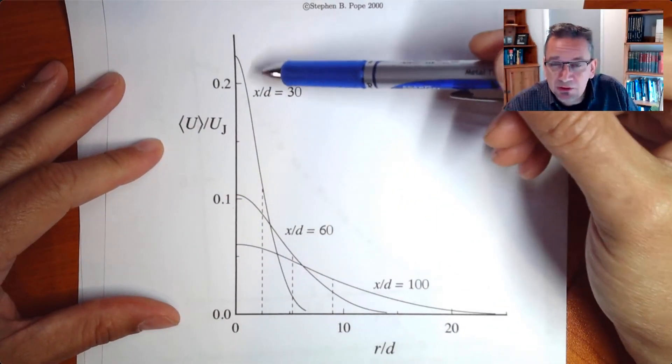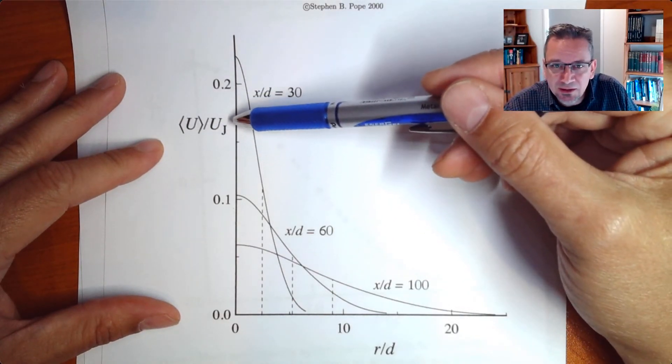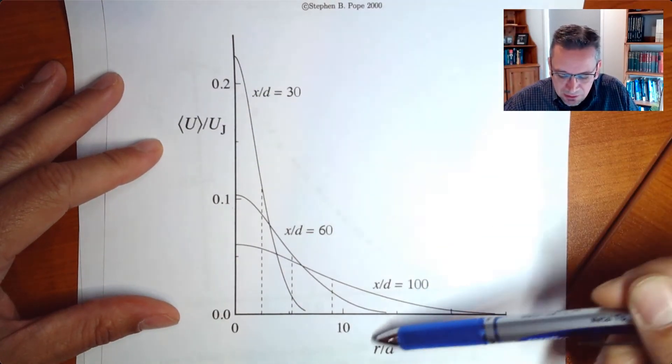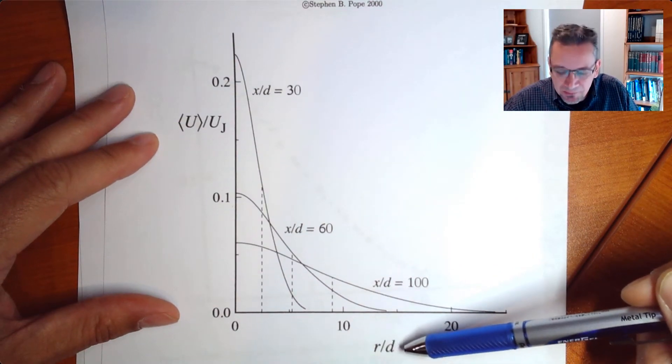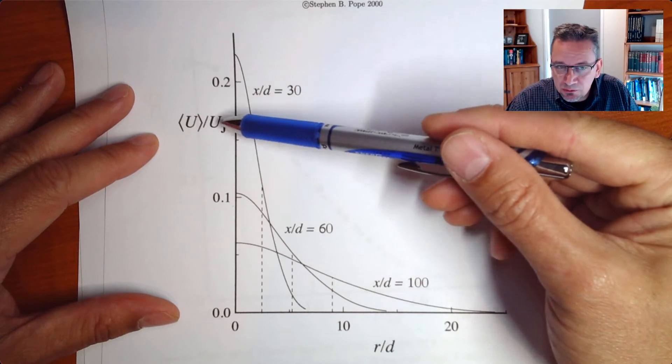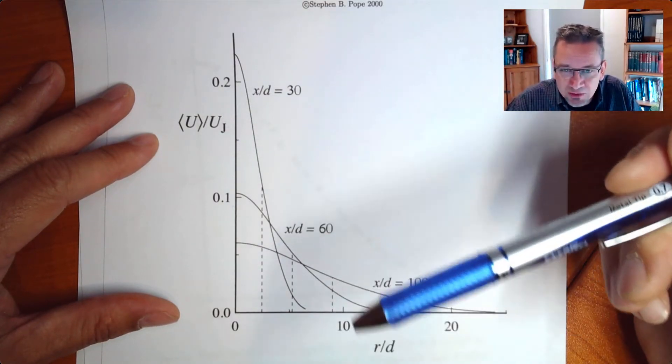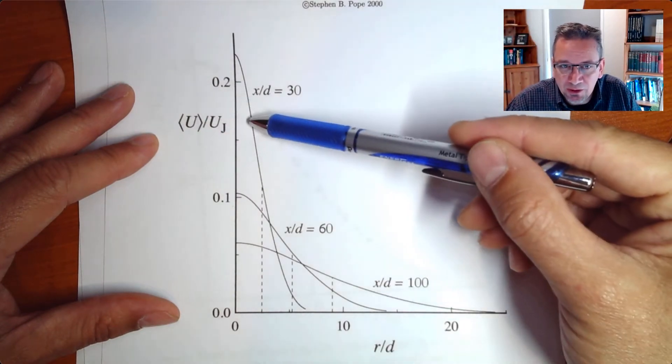So we have here first the raw data, more or less. So you have normalized it with the jet velocities, or the exit velocity of the jet and the diameter at the jet. So these are not very useful quantities to normalize with in terms of self-similarity because they are not dependent on x.